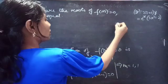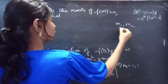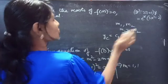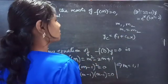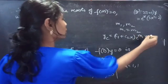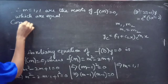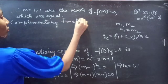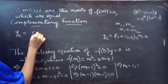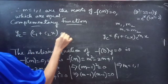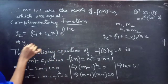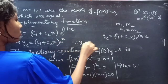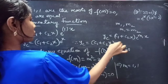We know that when two roots m1 and m2 are equal, we can write the complementary function as (c1 + c2·x)·e^(equal root · x). Since the two equal roots are m = 1, the complementary function is yc = (c1 + c2·x)·e^x.